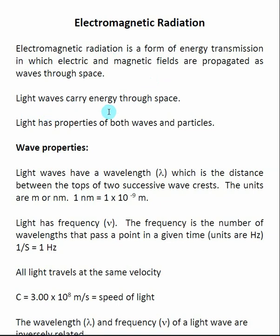Light waves carry energy through space. And another important idea is to remember that light has properties of both waves and particles. So when we talk about electromagnetic radiation, we're really just talking about different forms of light. And I think everybody knows that light comes in a variety of forms from x-rays to colored light to ultraviolet light.